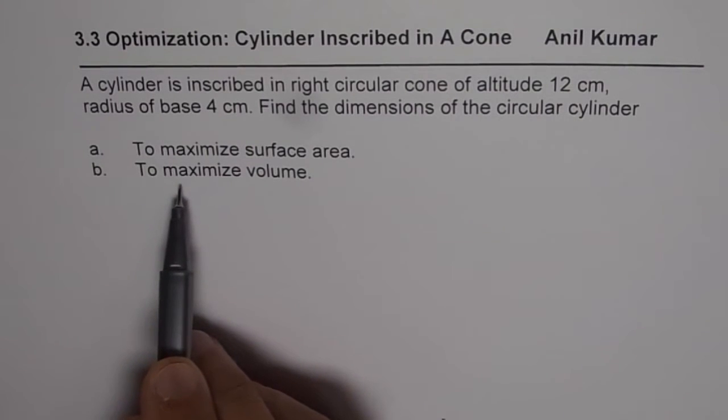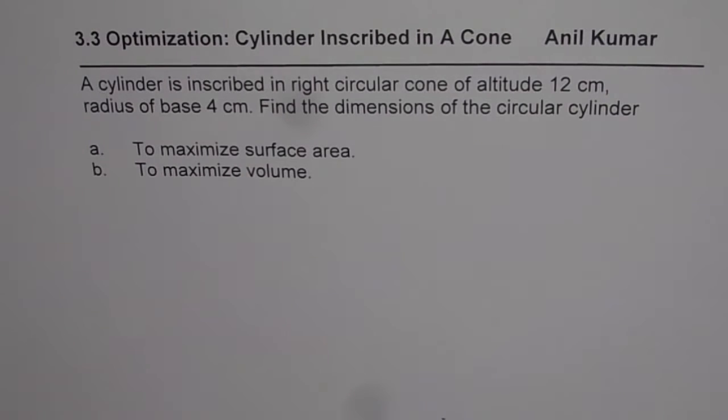Find the dimensions of the circular cylinder to maximize surface area and to maximize volume. So there are two different parts to it. Most of the time when you have these kinds of questions, we are interested in surface area and volume. So I will consider both of them in this particular example.